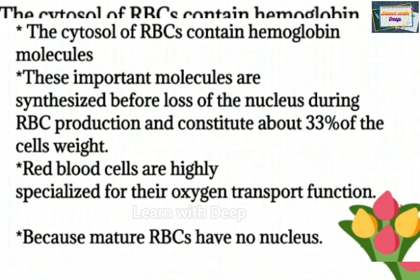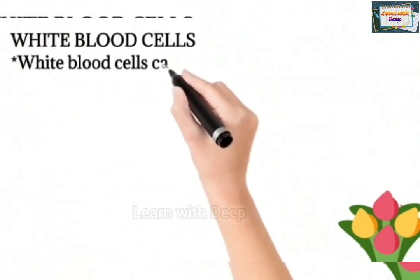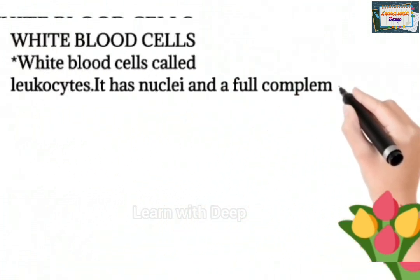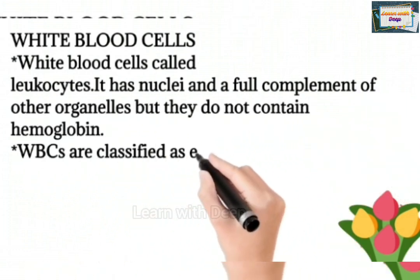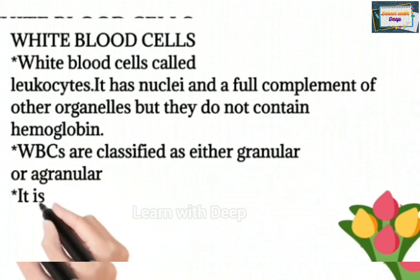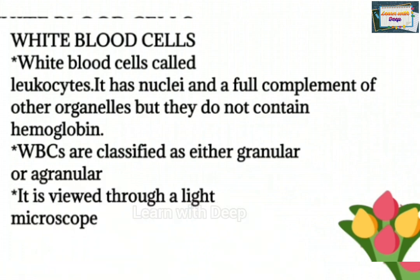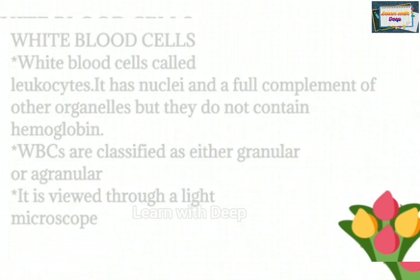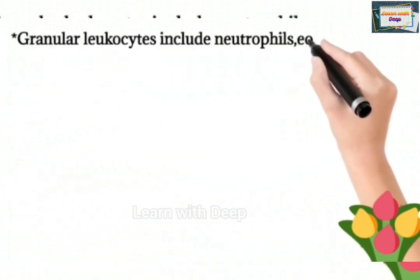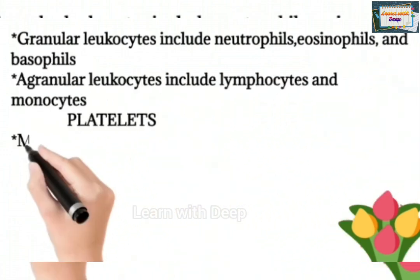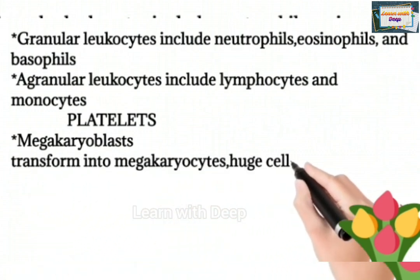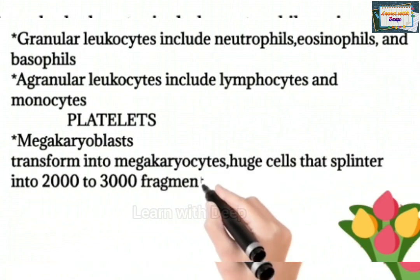Mature RBCs have no nucleus. White blood cells, called leukocytes, have nuclei and a full complement of other organelles but do not contain hemoglobin. WBCs are classified as either granular or agranular when viewed through a light microscope. Granular leukocytes include neutrophils, eosinophils, and basophils. Agranular leukocytes include lymphocytes and monocytes.